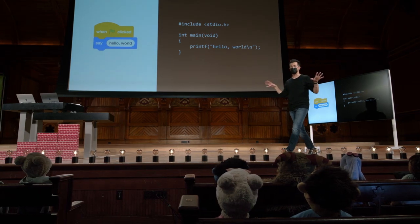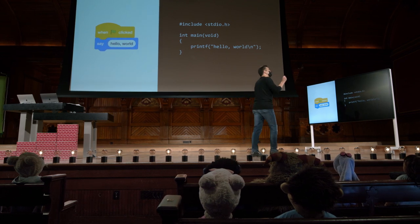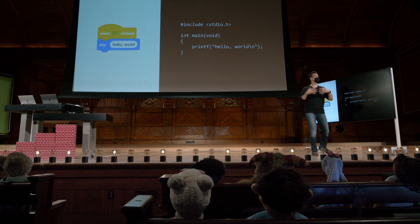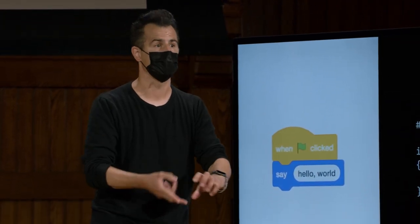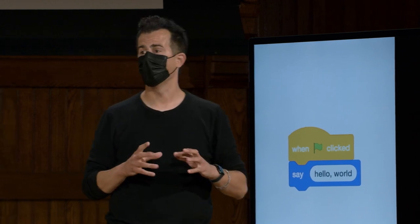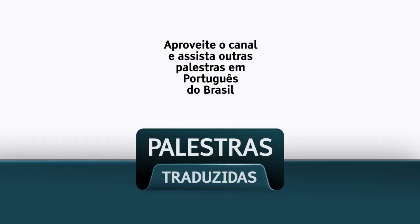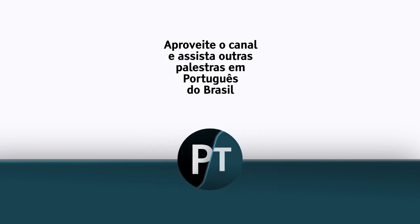A palavra string, incrivelmente comum no mundo da programação, não é uma ideia do CS50, mas do C. Tecnicamente, não há esse tipo de dados como string por padrão. Nós meio que inventamos isso para simplificar nas primeiras semanas — é uma ajuda no treinamento. Veremos por que estamos usando getString e string, porque C, de outra forma, torna as coisas muito mais desafiadoras no início.